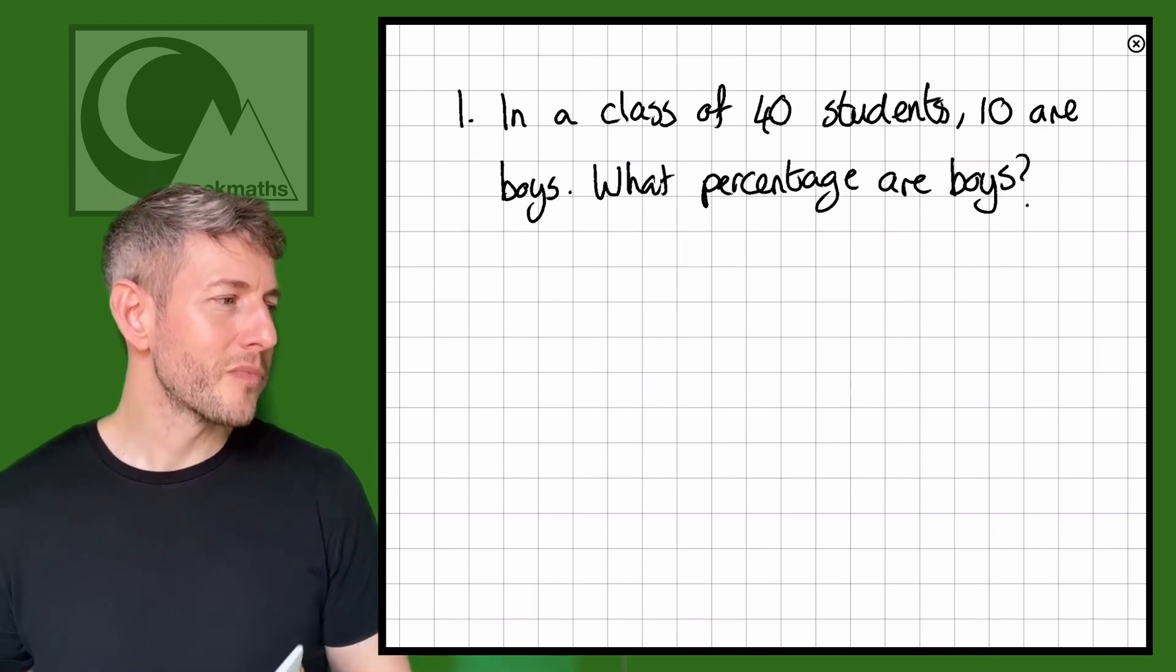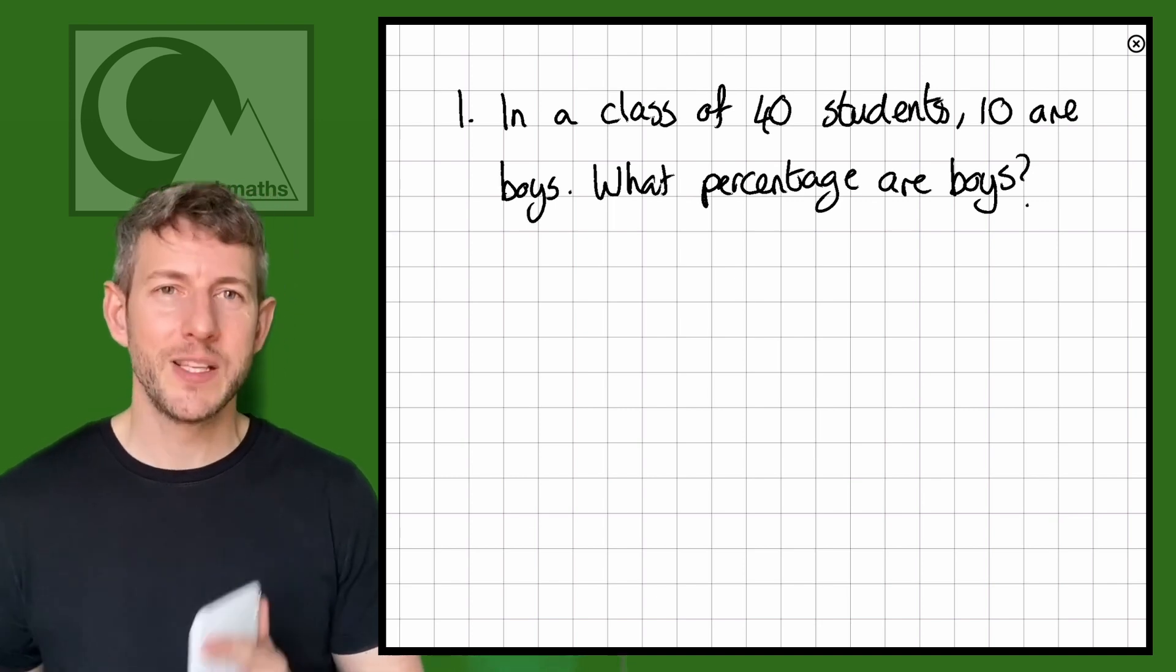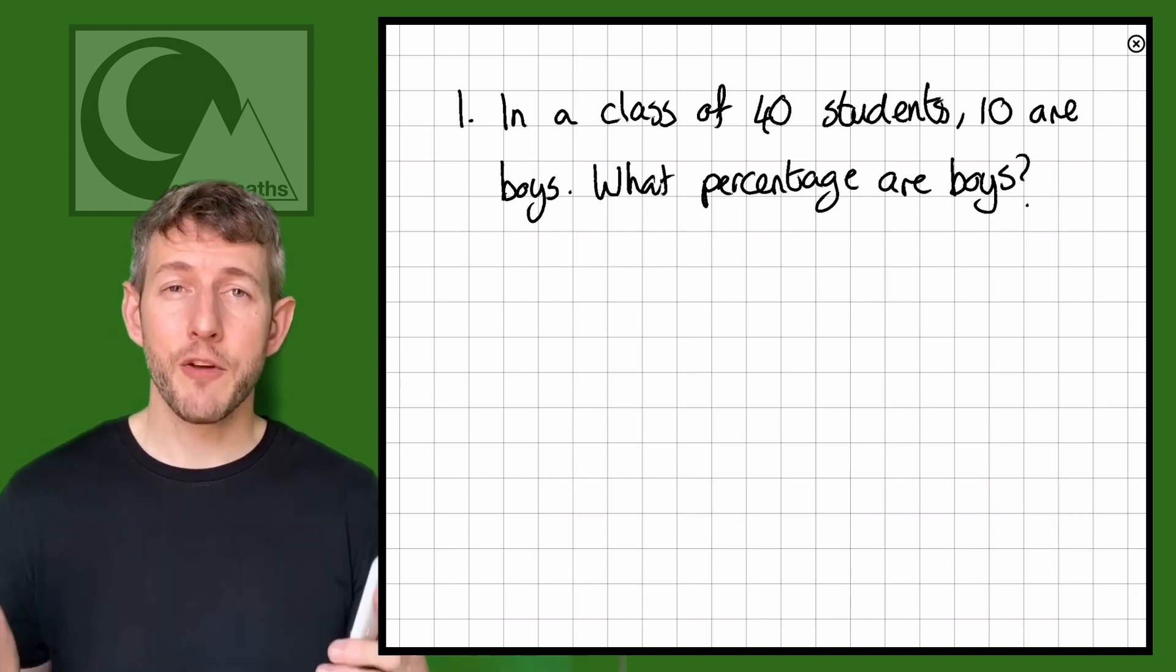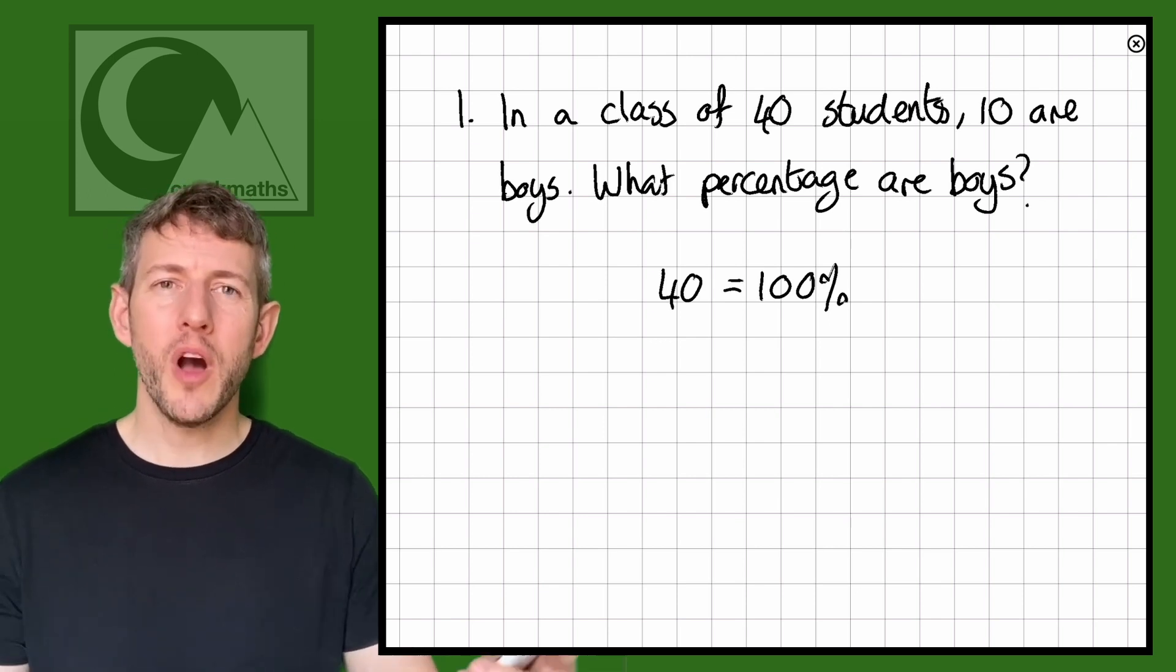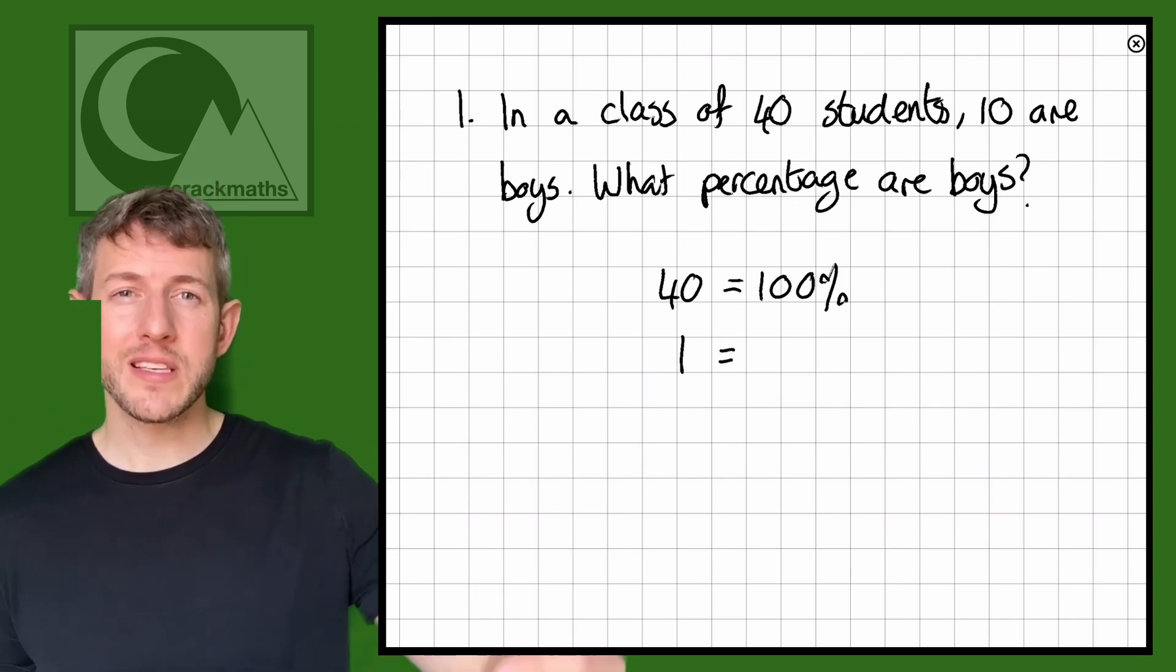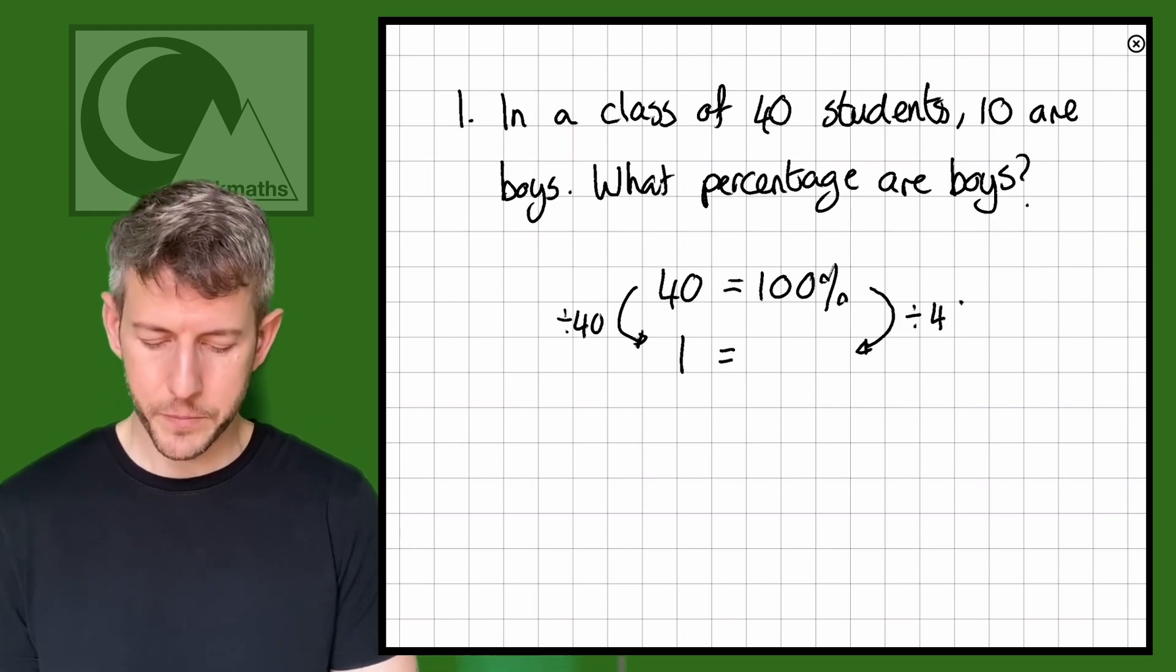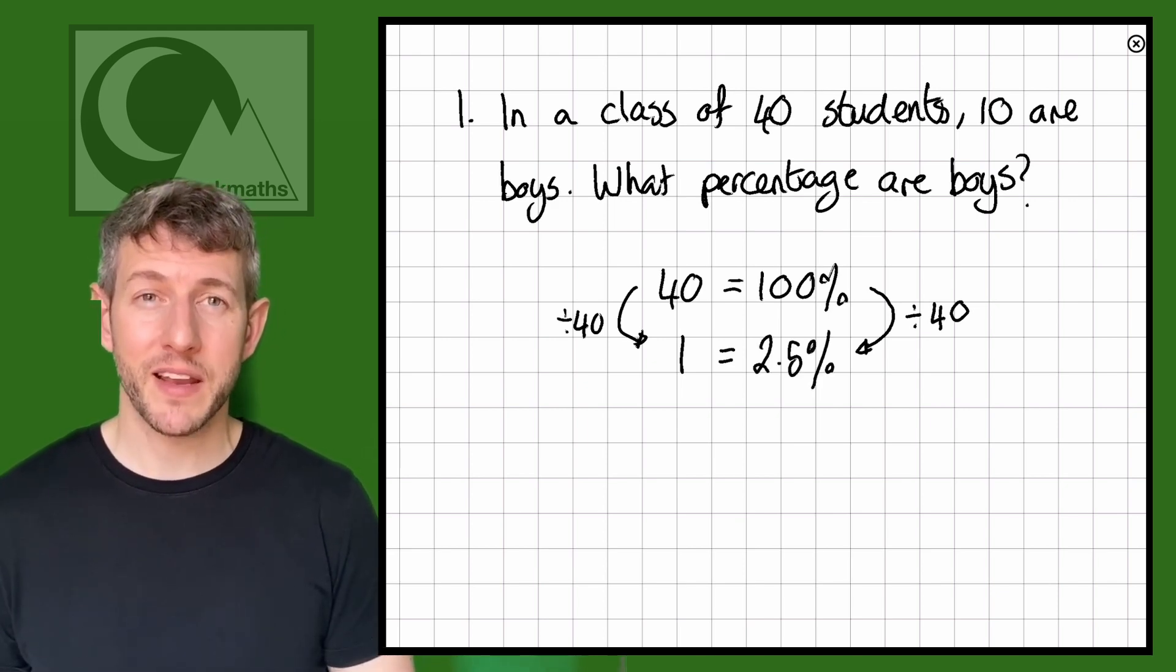So let's have a look at this question. Question one says, in a class of 40 students, 10 are boys. What percentage of the class is boys? So we know that we've got 40 students here. So 40 students is 100% of the class. So we can write down 40 equals 100%. Now what we can do is we can work out what percentage each of those students represents. So 40 divided by 40 gives us one, so that's each student. And because it's direct proportion, we do 100 divided by 40 as well. So I'm going to do that on my calculator. 100 divided by 40. So each student is worth 2.5% of the class.